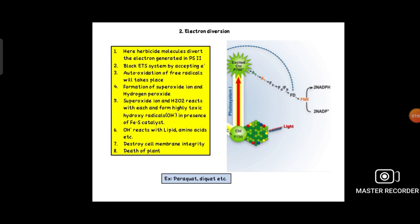The superoxide ion will form hydrogen peroxide also. This superoxide ion and hydrogen peroxide react with each other and form highly toxic hydroxyl radicals in presence of iron-sulfur catalyst. This hydroxyl ion is more toxic and will break down lipids, amino acids, and proteins, destroying the cell membrane integrity. As a result, death of the plant will occur.